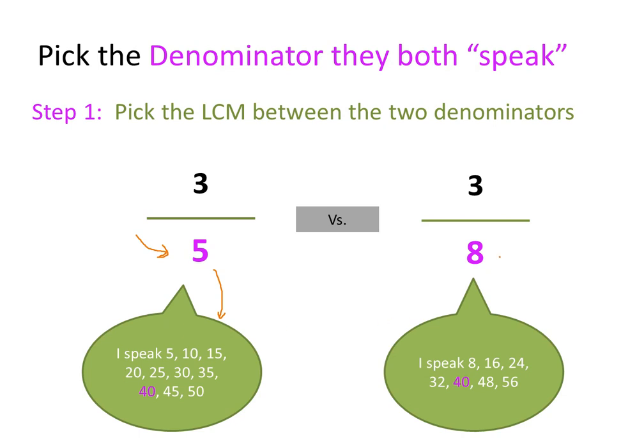Doing the same for the 8, listing his multiples: 8, 16, 24, 32, 40, 48, 56. I don't need to go any further because I can tell right here with the 40 and the 40, I have found a language that they both speak, kind of like the boy and the girl. They spoke all kinds of languages, but I picked the first one that they agreed upon. So my least common multiple is 40.